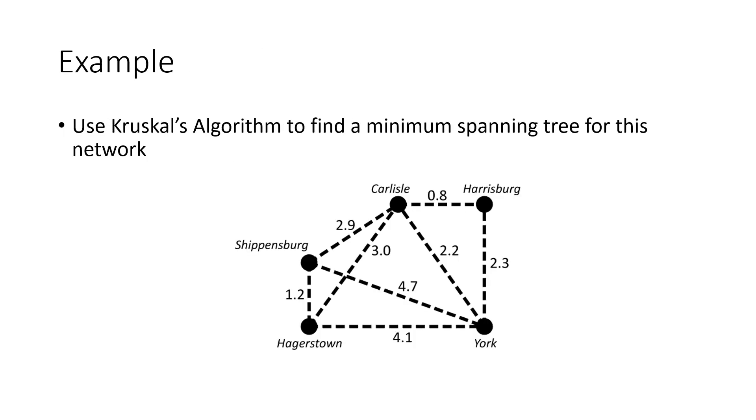Let's see this in action. We've got our original graph, so none of the edges are connected to my network, and I'm going to start adding them one at a time. I look through my graph and find the cheapest edge, and I add that edge first. The cheapest edge is here from Carlisle to Harrisburg. That's the first edge in my graph. What's the next cheapest edge? The next one is 1.2 from Shippensburg to Hagerstown. That's the next lowest number. And adding that edge did not create a circuit, so I keep that. The next lowest number is the 2.2 from Carlisle to York. So I add that edge because adding that edge would not create a circuit.